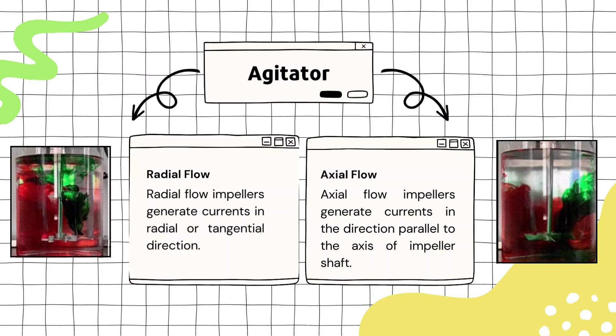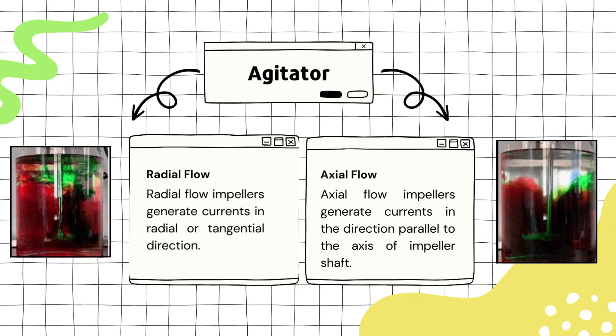The classification of agitators based on the direction of the swirling current is done into two types: axial flow and radial flow. The impellers following these patterns are known as axial flow impellers and radial flow impellers.